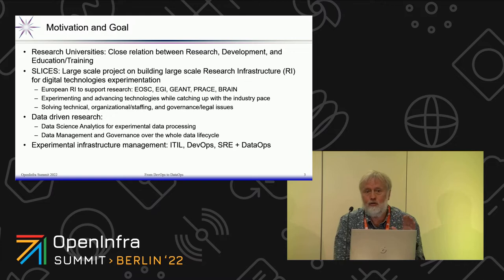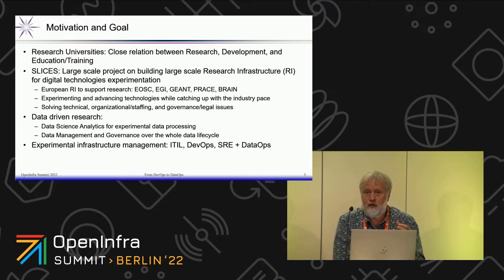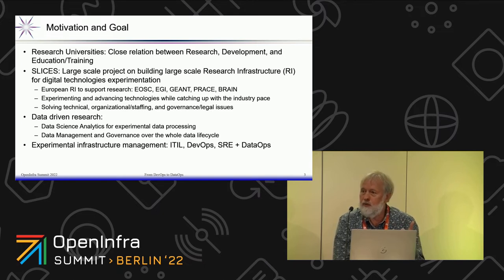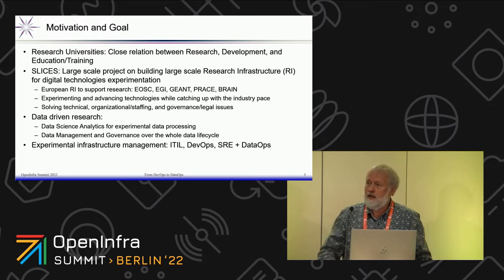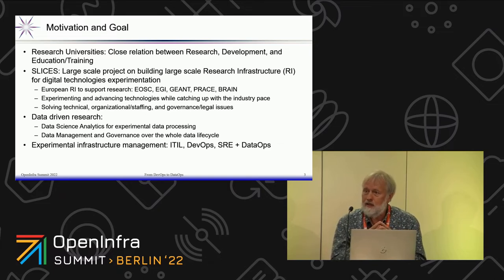Europe is building and investing in research infrastructures that serve all researchers in Europe — such as EOSC (European Open Science Cloud), EGI (European Grid Initiative), GÉANT (the network infrastructure for universities), PRACE (the supercomputing infrastructure), and BRAIN (for brain emulation). Now SLICES is a new infrastructure being built over approximately five years.